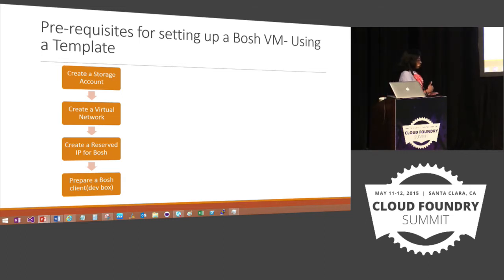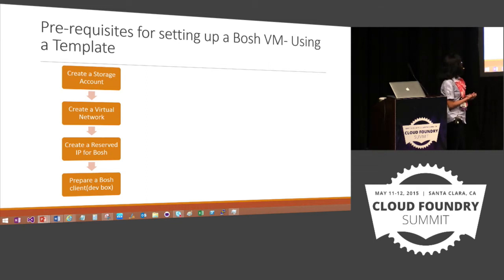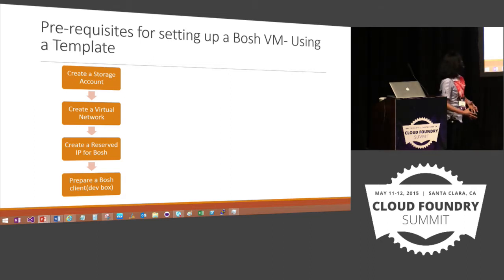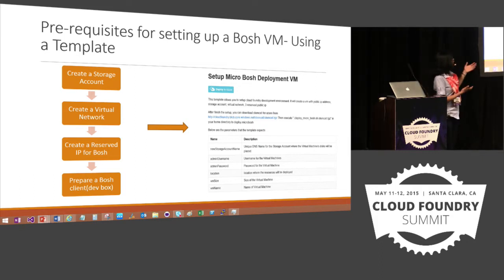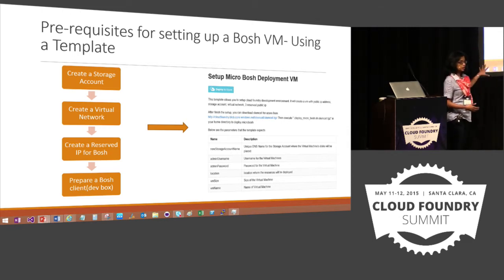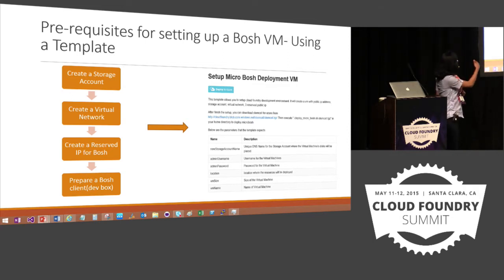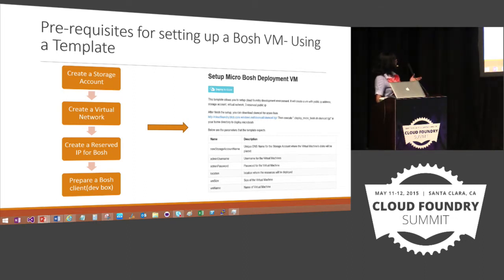If you've used Cloud Foundry, you know that to set up your Bosch virtual machine you need prerequisites like a storage environment, virtual network, reserved IPs, and a dev box. We have taken all these steps and provided a getting-started template, available in GitHub. Behind the scenes, this template provisions all these resources and parameterizes them so you can specify your own values. When this single-click template is deployed, you get the environment configured for running Bosch. As you use Azure for deploying Cloud Foundry, you'll come across templates in many places — and Ning will demo the template.